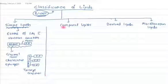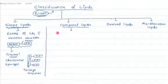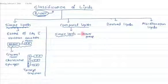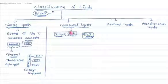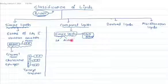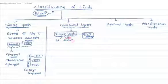Now let's move to the second group, that is the compound lipids. Compound lipids are simple lipids which are covalently bound with some other group. One thing to understand is that simple lipid contains fatty acid and alcohol, so this other group cannot be a fatty acid or an alcohol — it must be different.